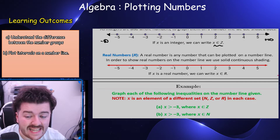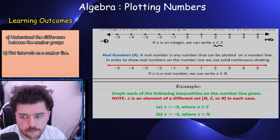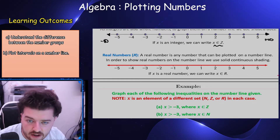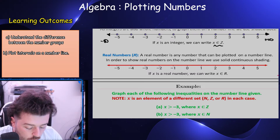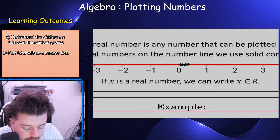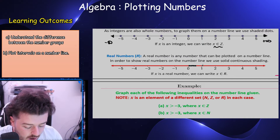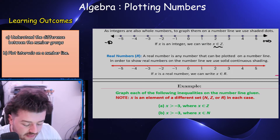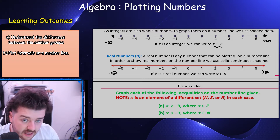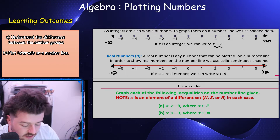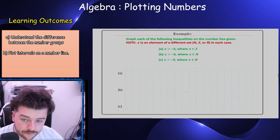Real numbers — this is the final number group for this chapter. A real number is literally any number that can be plotted on a number line: a half, a quarter, pi, square root of two, 3.5675 — any number you can think of. Because there are infinitely many dots along the line, we represent the whole set with a big thick red line from minus infinity to plus infinity.